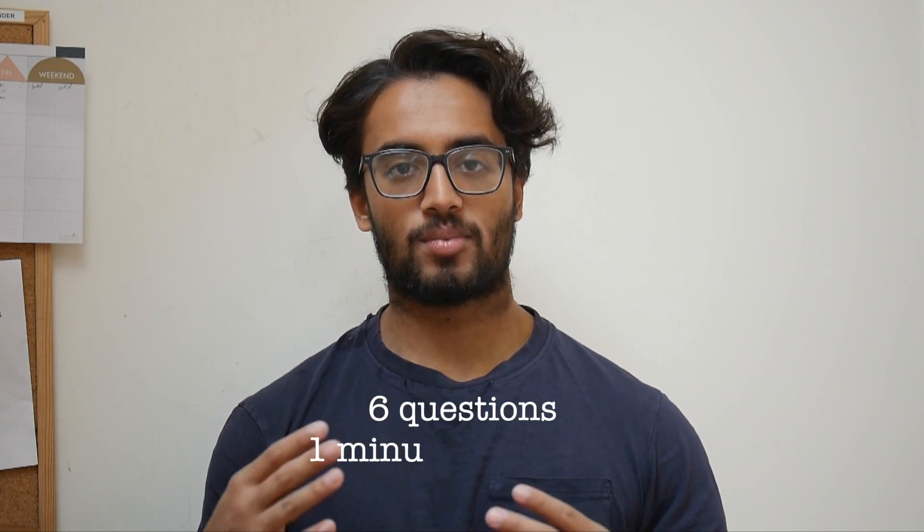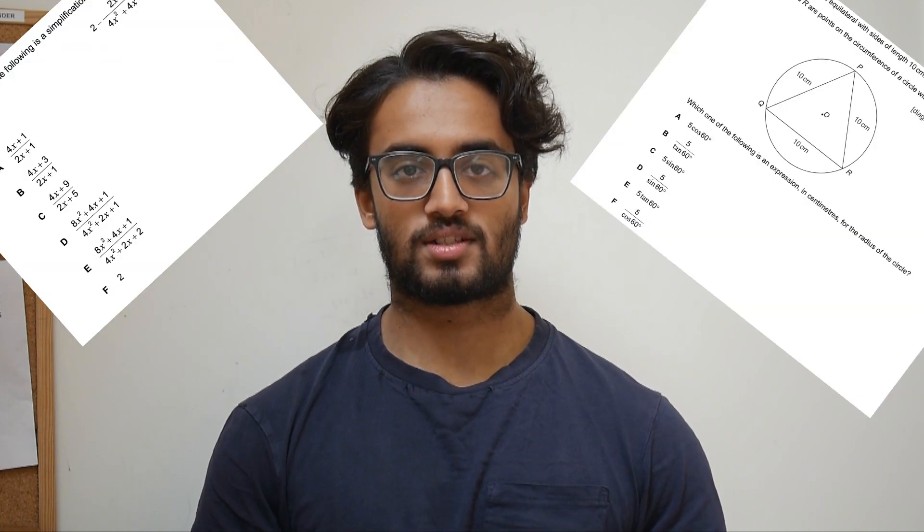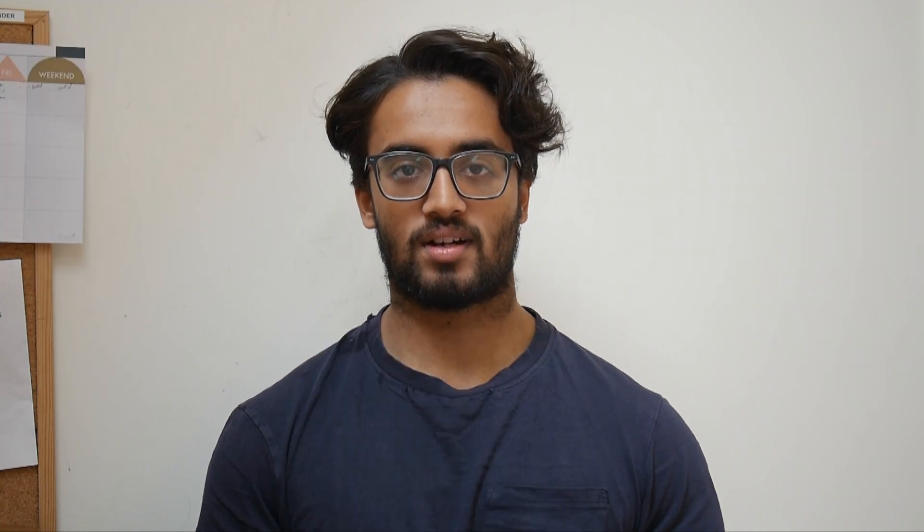First of all, what does BMAT Section 2 Maths consist of? You're going to have six questions and about one minute per question with a variety of different question types. You're going to have algebra questions, shape questions, graph questions, etc. Technically they're allowed to ask you anything from the BMAT Section 2 Assumed Knowledge Guide. It's based loosely on GCSE syllabuses but questions can really vary in difficulty.